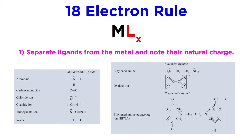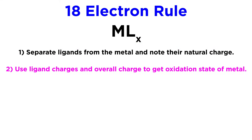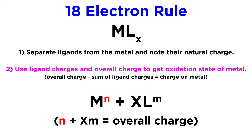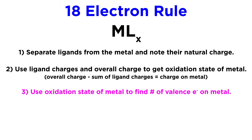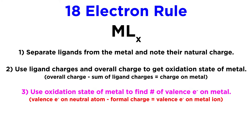First we must separate each ligand from the metal, and allow all ligands to exist with their natural charge. Next, using the charges on the ligands and the overall charge on the complex, we can calculate the charge, or oxidation state, on the metal center. Because the charge on the metal plus the charges on the ligands should add up to the overall charge, we simply subtract the sum of the ligand charges from the overall charge to get the charge on the metal. Then, using this charge, we calculate the number of valence electrons on the metal.